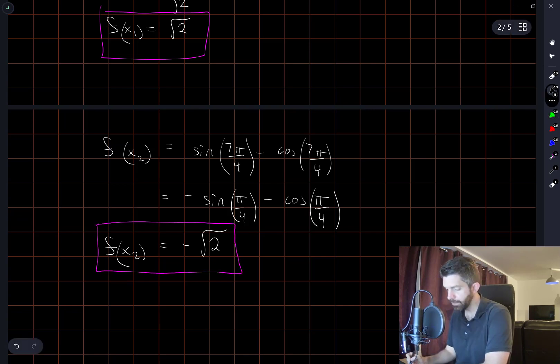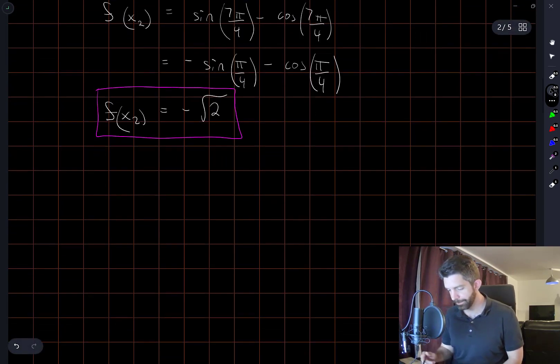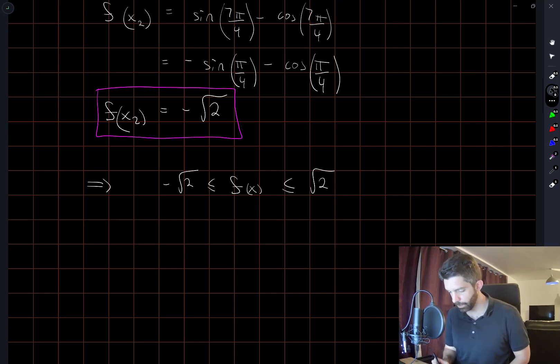So there were only two critical values of the function for values of x between 0 and 2π. That is, there's only two points, there's only two values of x where the derivative of f is 0. The function is continuous and periodic and nice. So, you know, these two values have to correspond to the global minimum and maximum. And so this tells us that f of x is between the square root of 2 and negative square root of 2 for all values of x. Which of course means that the absolute value of f is less than the square root of 2. And so we have shown what we were originally asked to show.